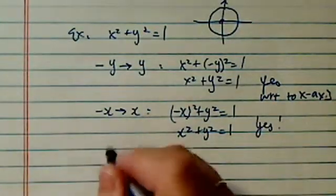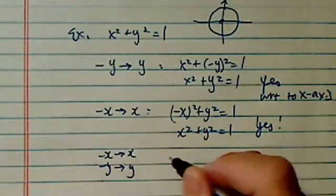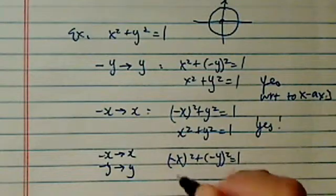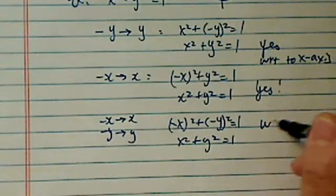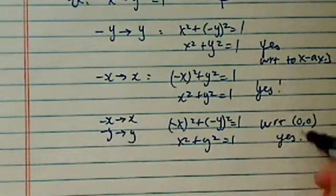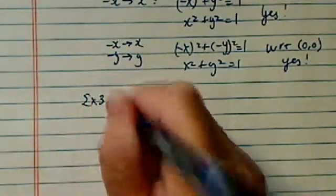And then minus x to x, minus y to y. And I have (-x)² + (-y)² = 1, which is exactly the same as what I had before. So with respect to (0,0), yes, it is indeed symmetrical. So example 2 is just completely opposite of example 1.